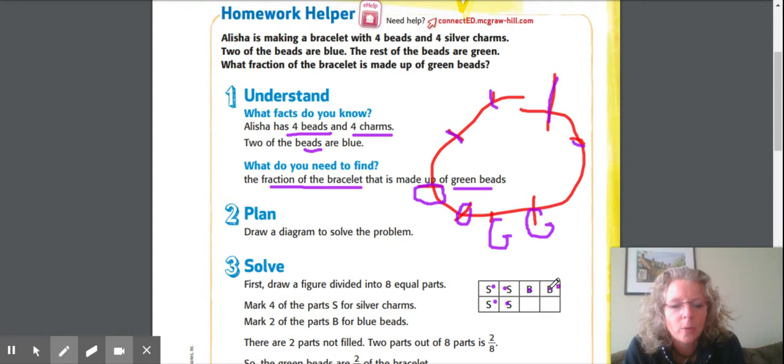They want to know, okay, what's green? Well, these two are green. Two of them are green out of how many? Out of how many? Eight. And you can see that right there. Two eighths of the bracelet is made up of green beads.